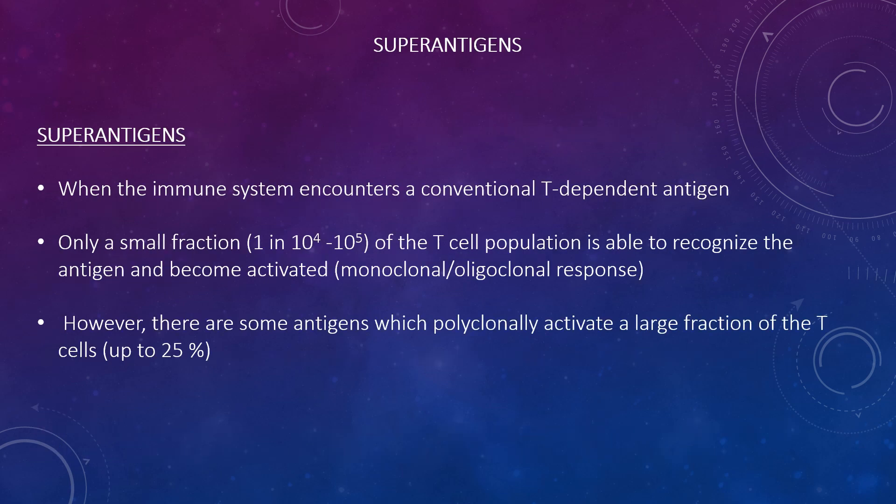Let's look at the phenomenon known as superantigens. When the immune system encounters a conventional T-dependent antigen, only a small fraction of the T-cell population is able to recognise it and become activated. However, some antigens polyclonally activate a large fraction of T-cells — up to 25% — and these are called superantigens.